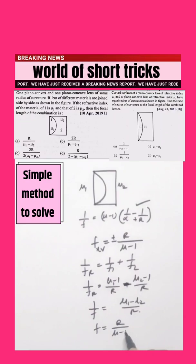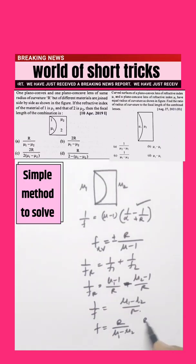Therefore f equals r by mu1 minus mu2. If asking to find the radius of curvature and focal length ratio, r by f becomes mu1 minus mu2. That's it.